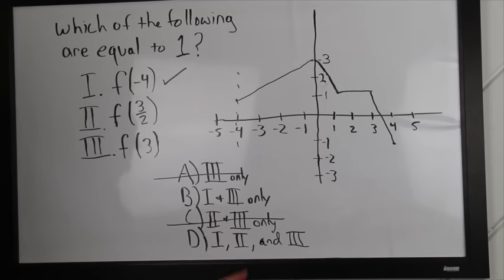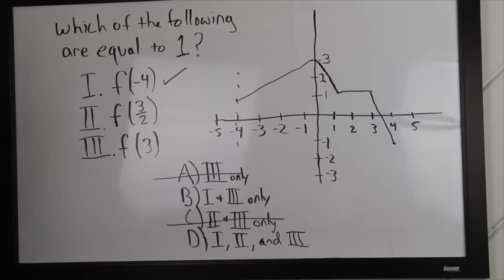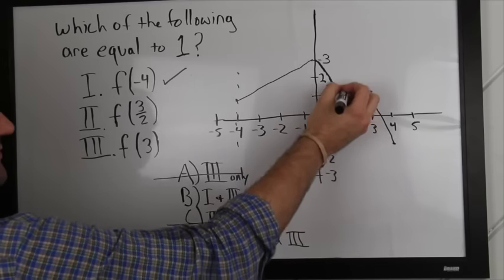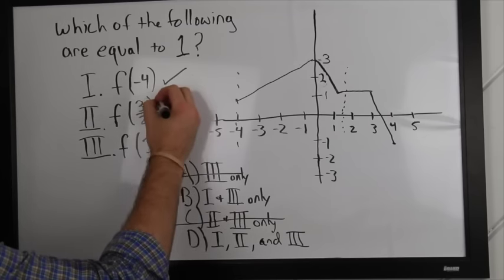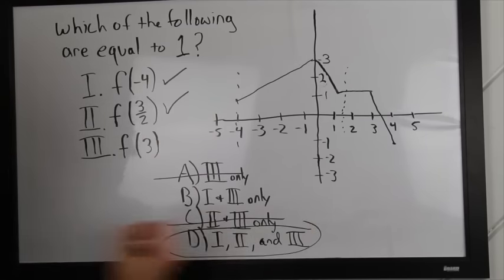Number 2 says f of 3 over 2. Now, remember 3 over 2, guys, simple. Don't put it in your calculator. It's 1.5. So, 1.5 would be somewhere right around here, our x value. And our y value is, of course, 1. So, this one's true. Therefore, our answer is D.